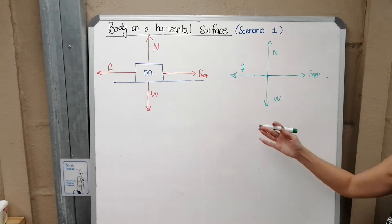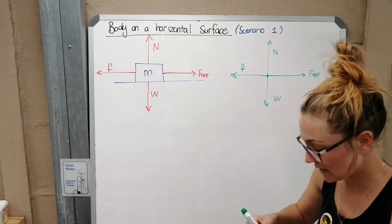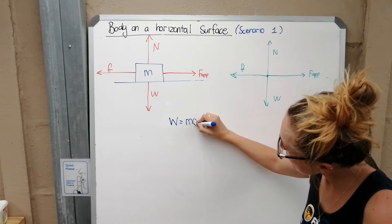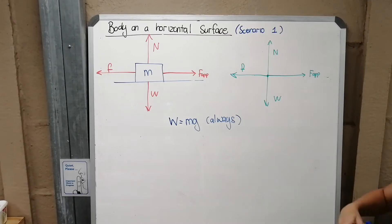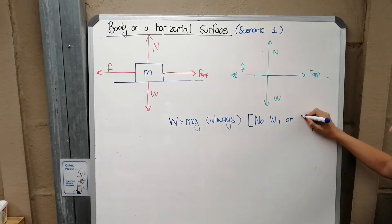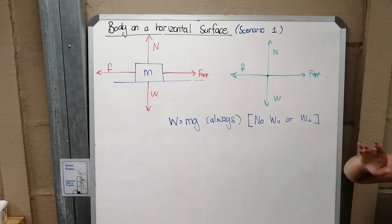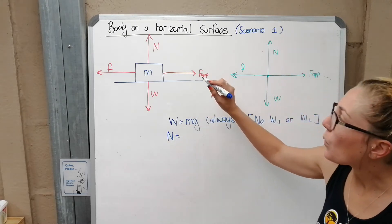The frictional force could be kinetic (f_k) or static (f_s) depending on the magnitude of the applied force. Starting with weight: weight is always equal to mg — always. A key note for a horizontal surface is that there are no parallel or perpendicular components of weight, because the weight is already perpendicular to the surface. So it's just plain W.